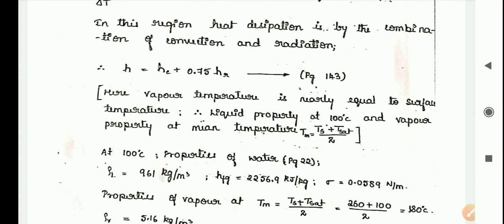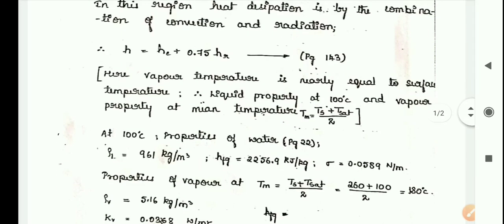We note down the properties of water available on page number 22. At 100 degrees: rho L equals 961 kg per meter cube, hfg is 2256.9 kilojoule per kg, and sigma is 0.0589 Newton per meter.